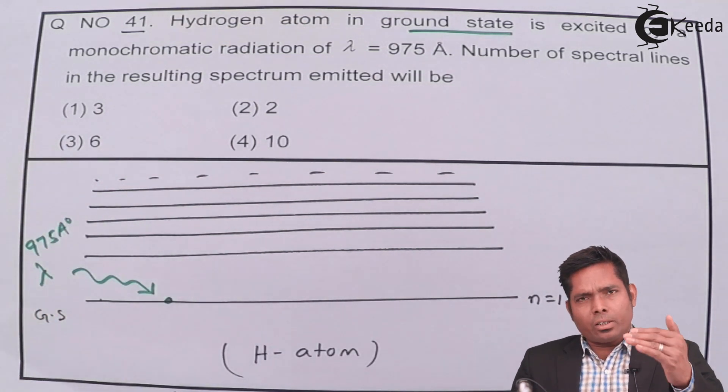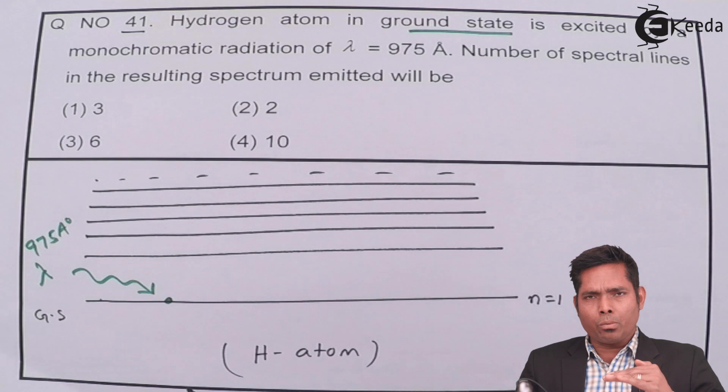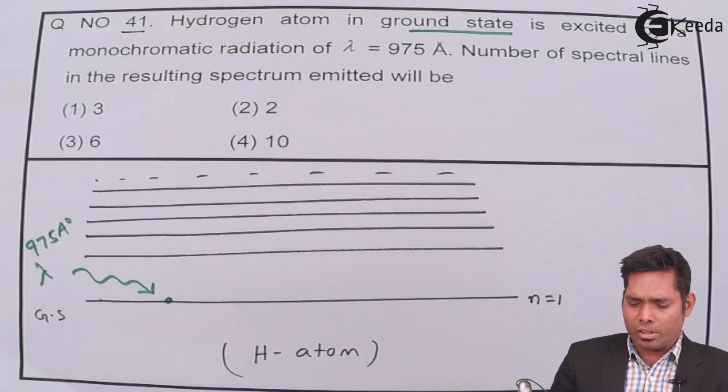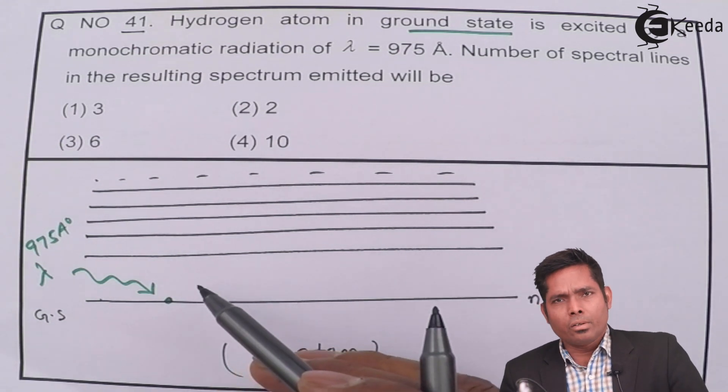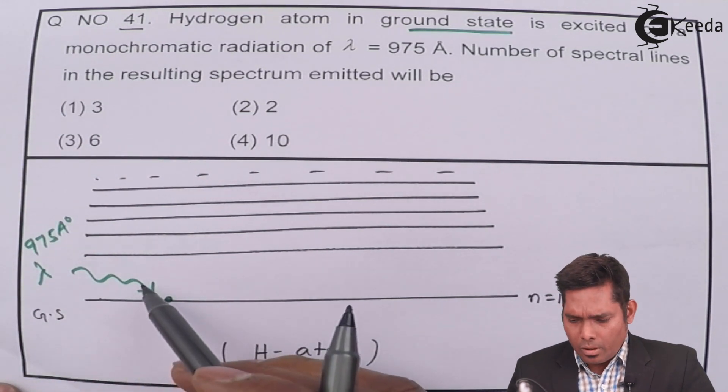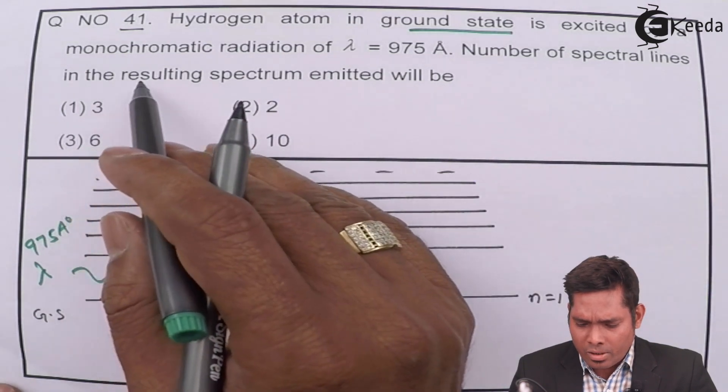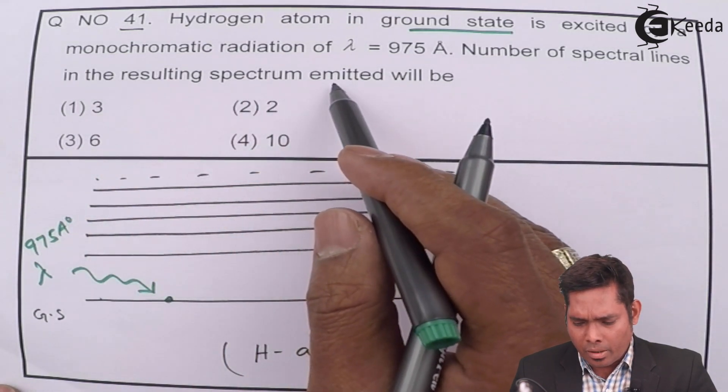When we know that when the electron drops from higher level to lower level, it emits radiation. And the reverse process, when it moves from lower to higher, it has to absorb radiation. And that energy is supplied by this wavelength. Whose wavelength is this? The number of spectral lines in the resulting spectrum emitted will be.